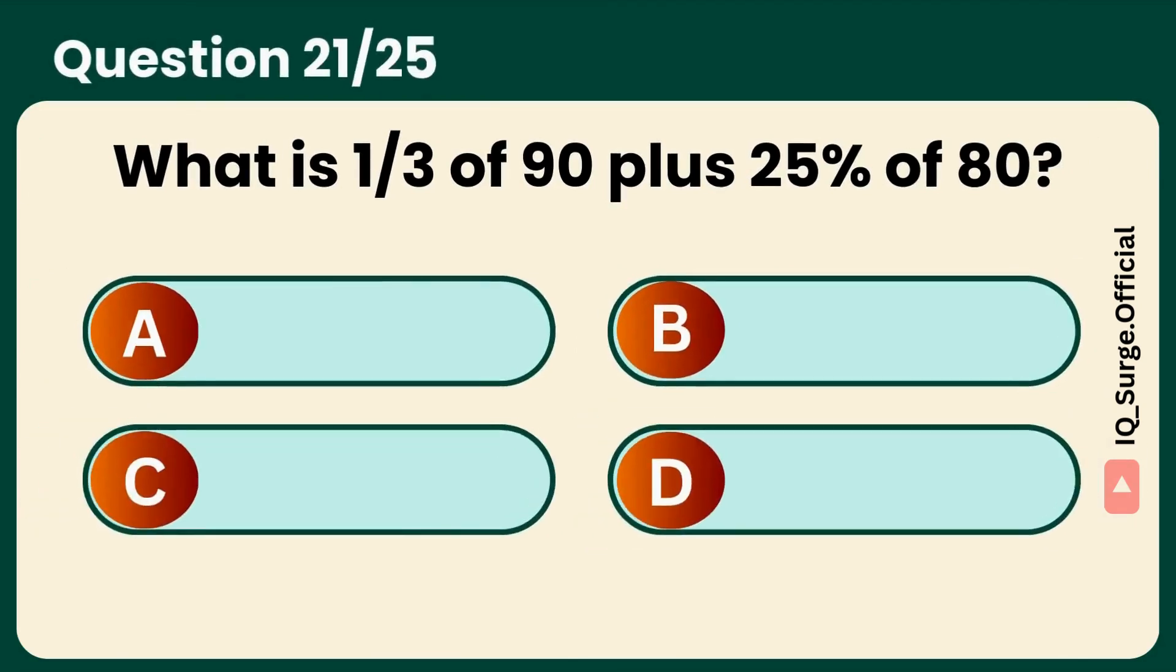What is one-third of 90 plus 25% of 80? Answer: 30 plus 20 equals 50.